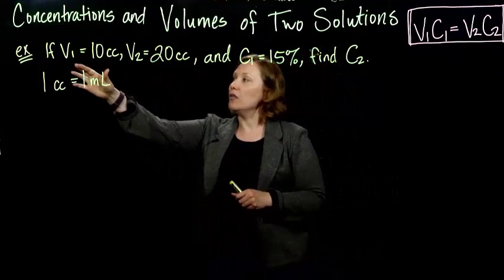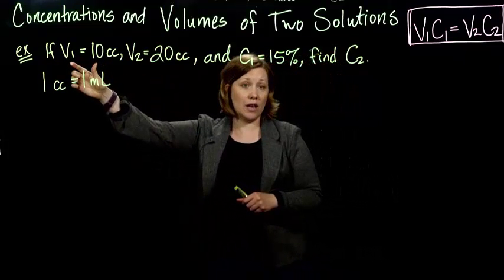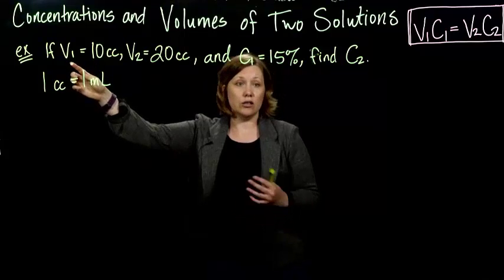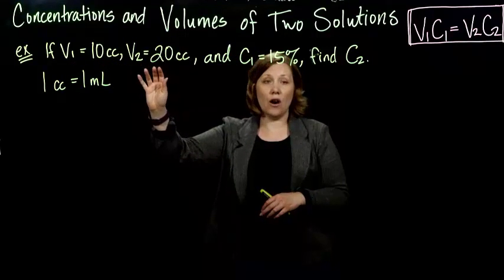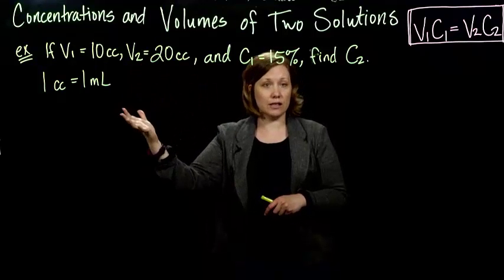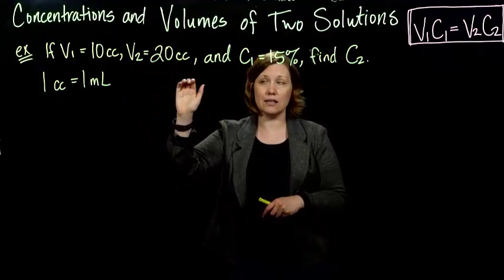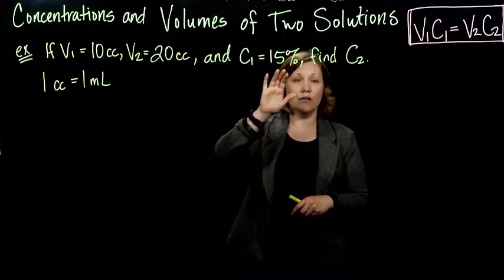Alright, so if you have the volume of your V1, the volume of your solution before it's diluted, is 10 cc's. V2 is the volume of the solution after it's diluted, so 20 cc's. And C1 is 15 percent.